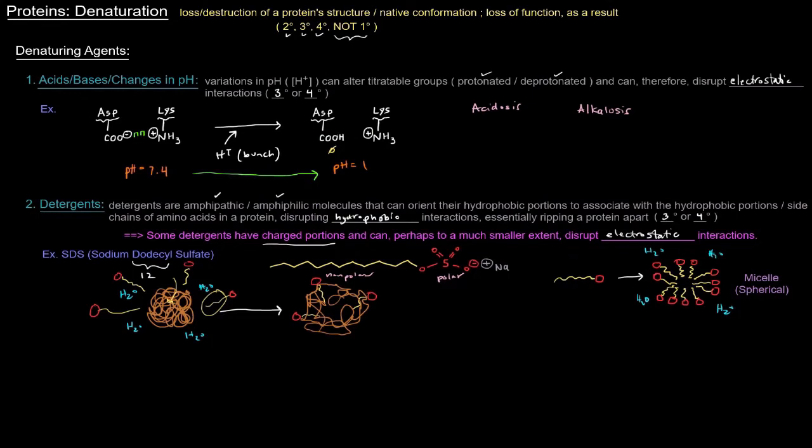So that's kind of the idea there with detergents, is that they'll destroy those hydrophobic interactions and kind of unfold the protein. So SDS is an example. Also, a lot of household cleaners are detergents, and they're toxic. One of the reasons they're toxic as detergents is that they can do this to proteins.